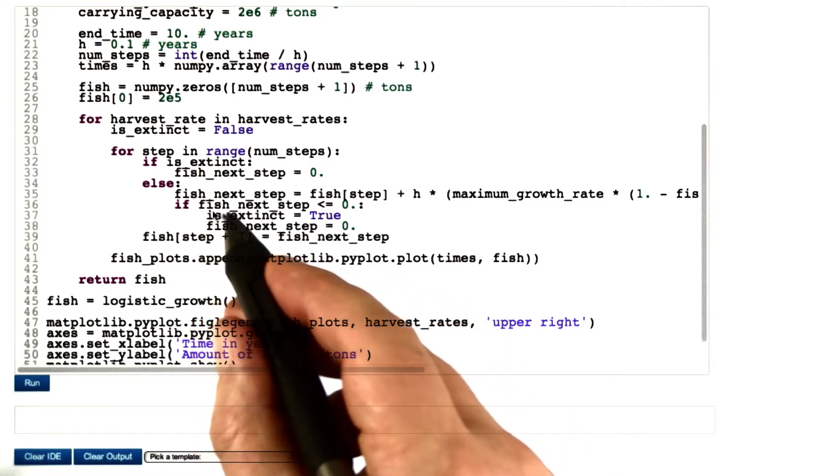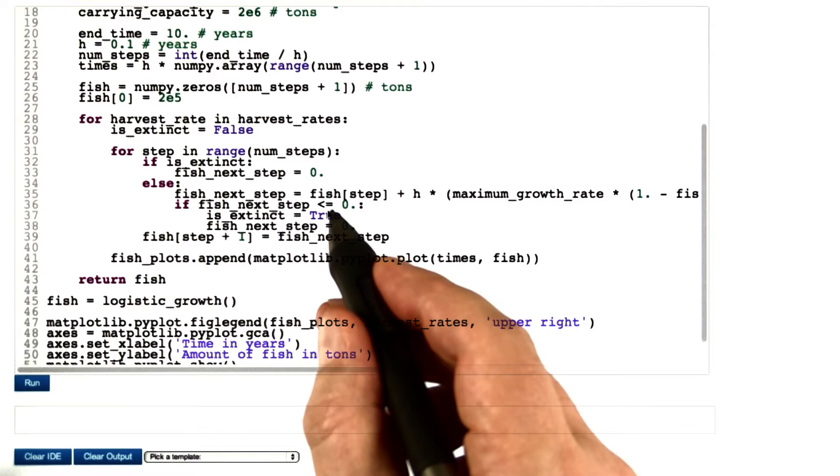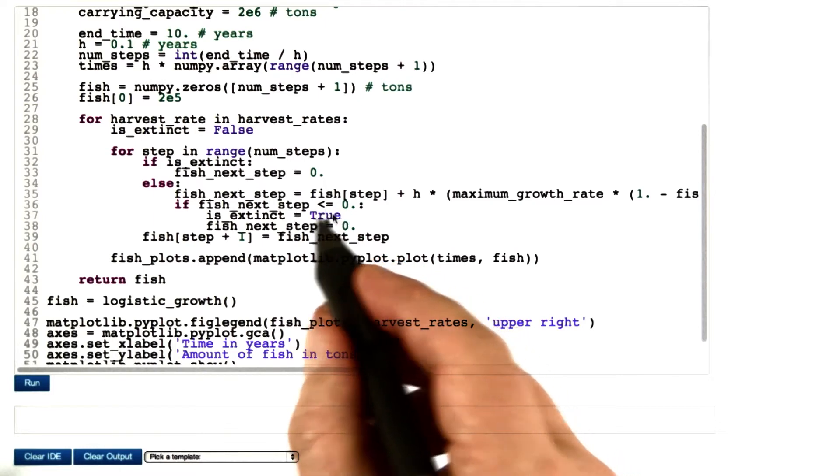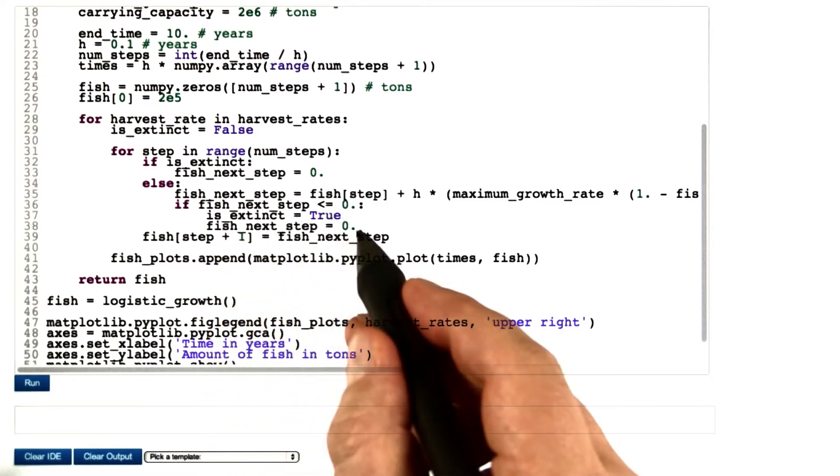We check whether or not the amount of fish for the next step is equal to zero or negative. If so, we set a flag that tells us whether I should be using zero for the amount of fish in all upcoming steps.